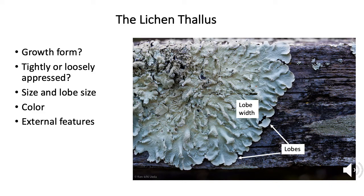The first term to know is thallus — that is with a 'th.' Thallus refers to the whole body of the lichen except for its reproductive parts. Unlike many fungi where most of the body is just filaments under the ground, most lichens have bodies that are pretty contained and visible. In many cases you can sort of see where it starts and ends — you could even draw a circle around the lichen. A lichen's body is a thallus.